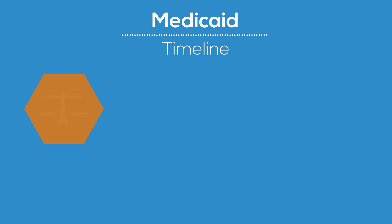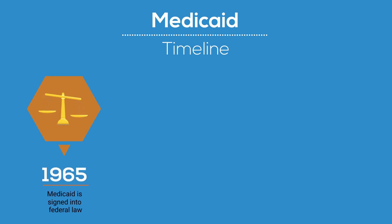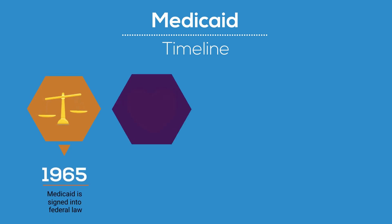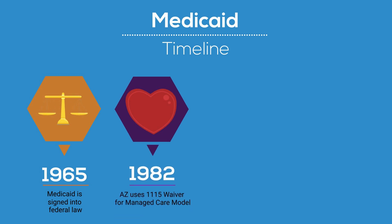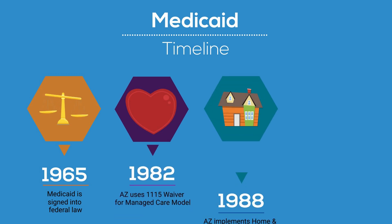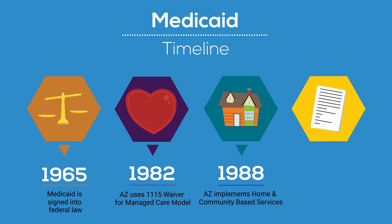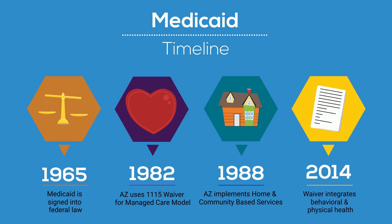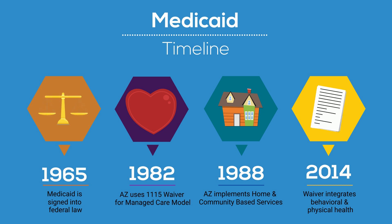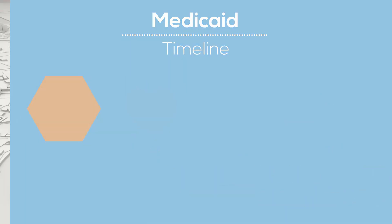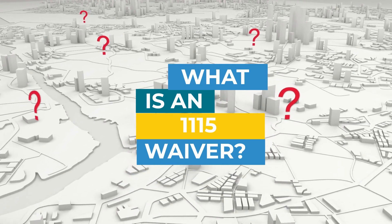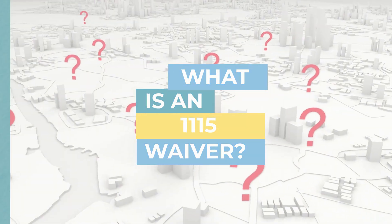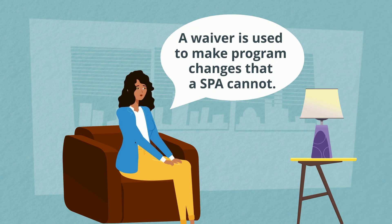The U.S. government created the Medicaid program in 1965 to provide health care services for children, pregnant women, and people who are elderly or disabled. Each state operates their own Medicaid program, but states can ask the federal government to waive the traditional Medicaid rules and allow them to make additions or changes. That's where a waiver comes in. A waiver is used to make program changes that a SPA cannot.